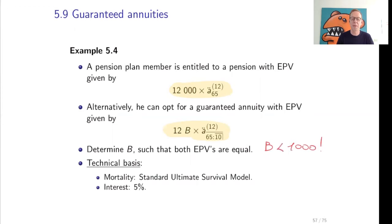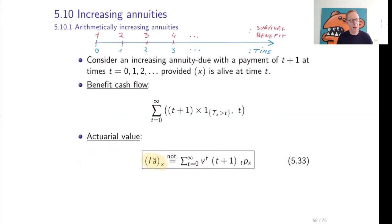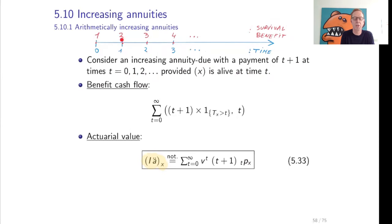Let us now have a look at increasing annuities. We start with arithmetically increasing annuities. We consider an increasing annuity due with the payment of t plus 1 at times t = 0, 1, 2, provided x is alive at time t. So on the timeline, we have times 0, 1, 2, 3, and so on, and the benefit due in case of survival at time 0 is 1, at time 1 is 2, at time 2 is 3, and so on.